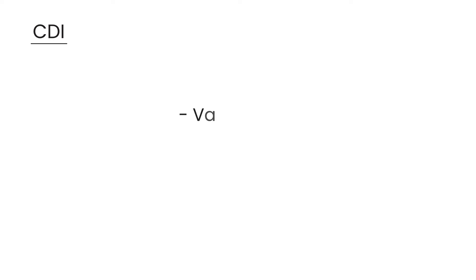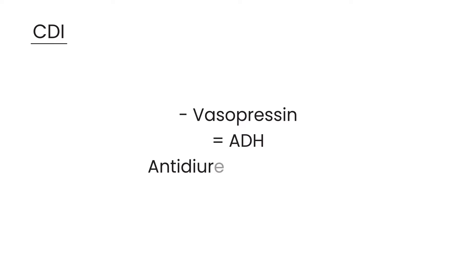Central Diabetes Insipidus is an issue that involves a hormone known as vasopressin, also known as ADH — anti-diuretic hormone. This hormone is synthesized in the hypothalamus, and it's stored and released by the pituitary in the brain. Before we talk about CDI, we need to discuss what ADH actually does.